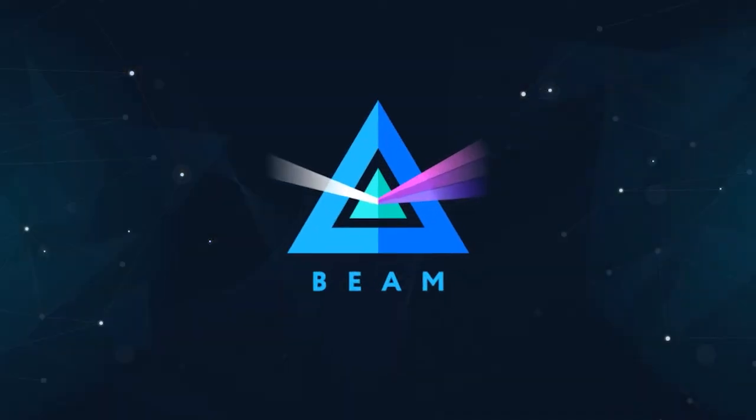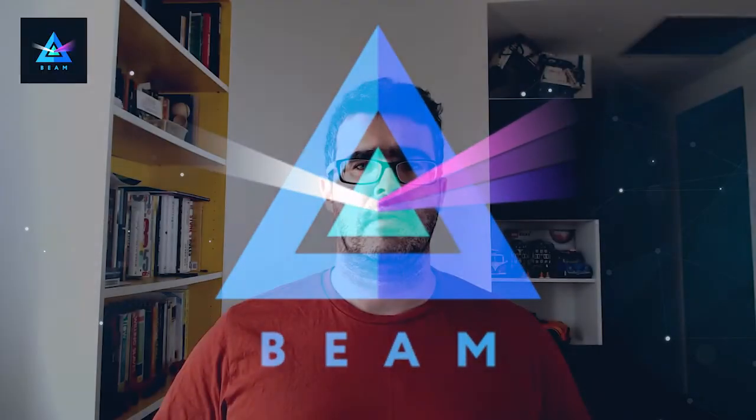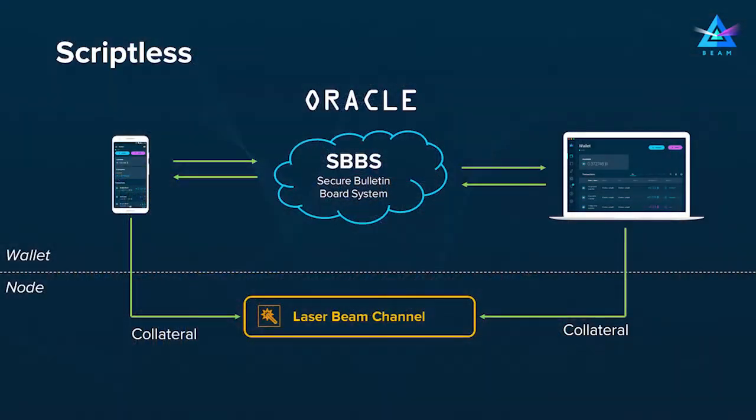Now let's talk about BIM Confidential DeFi infrastructure — our plans for the future and the types of architecture we're going to support. The first type I would like to discuss is the scriptless architecture, which we've been talking about for a while. Wallets will be able to create contracts using the SBBS system, and we will need some kind of oracle to give us the price of the asset being traded — whether it's a crypto asset or any real-world asset.